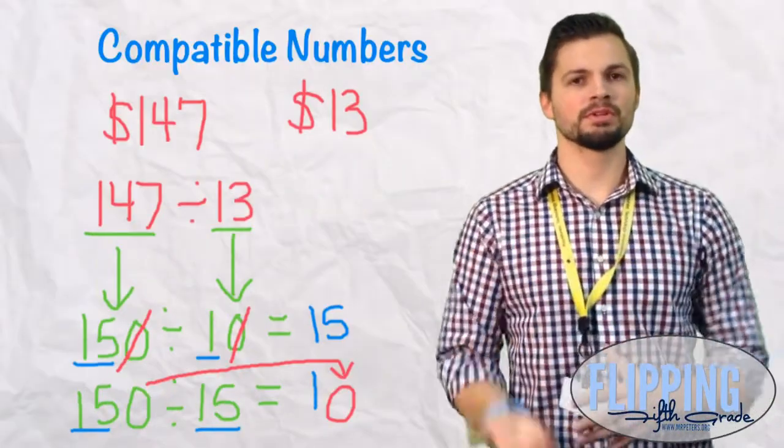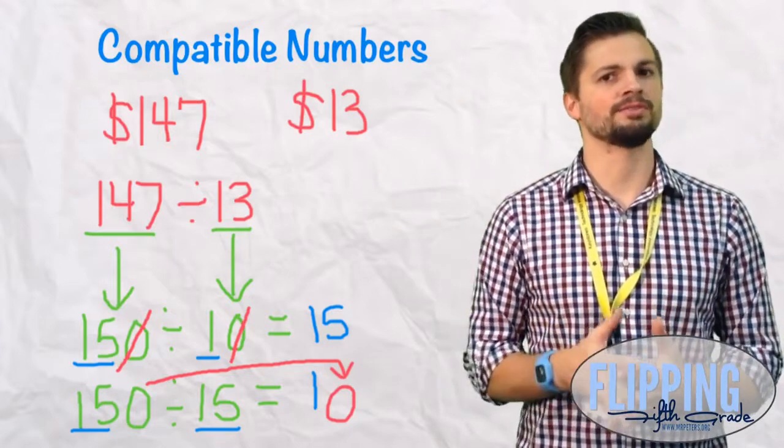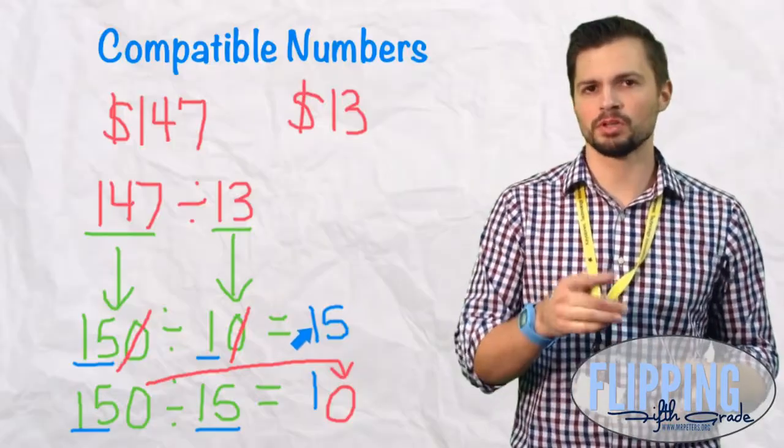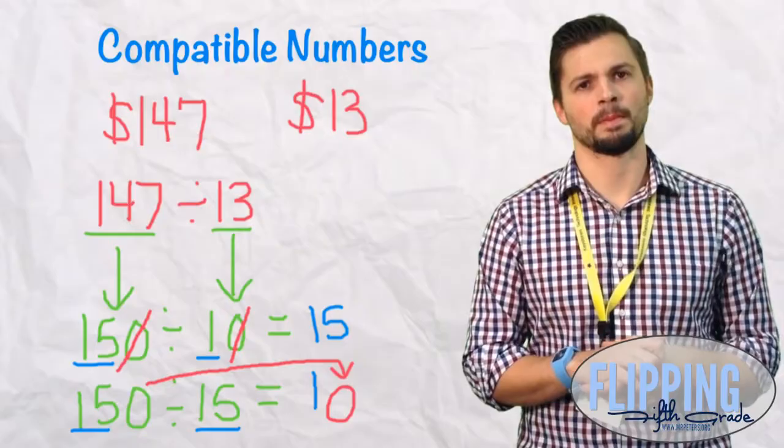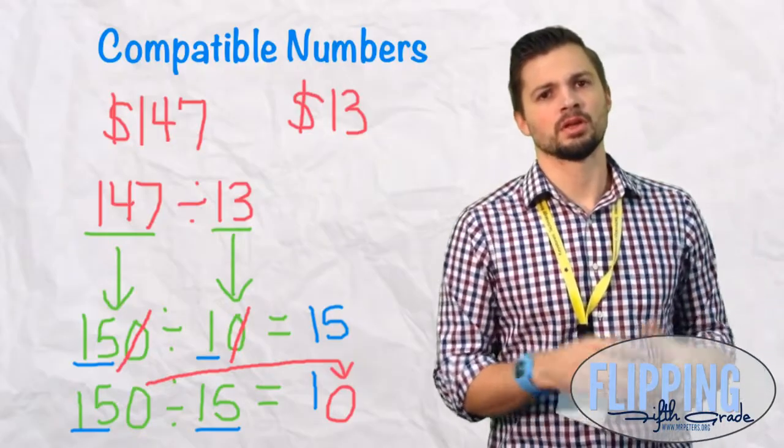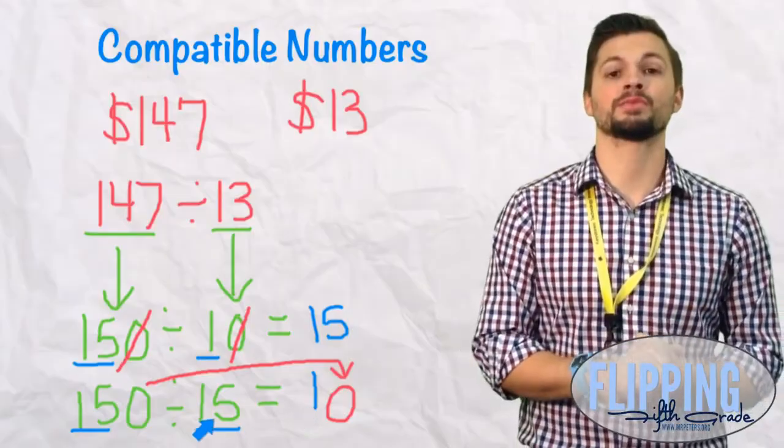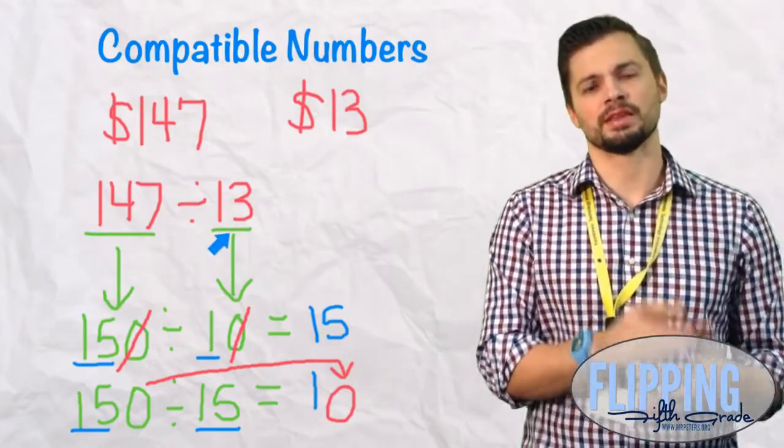So if we were going to give an accurate answer, we would say they could buy between 10 and 15 posters with that budget of $147. But which one is closer, the 10 or the 15? The one that's a little bit closer would actually be when we rounded it up to 15, because 15 is a little bit closer to 13 than 10 is.